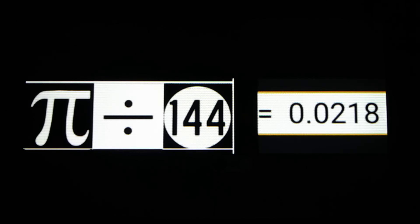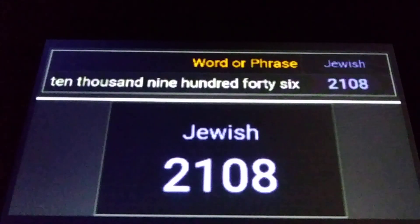Look at this little equation, brought to my attention by Lambda — a great YouTuber. Pi divided by 144 equals 0.0218. Like 218 — it's a very important number.